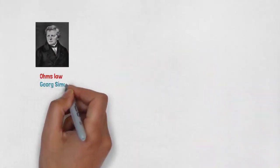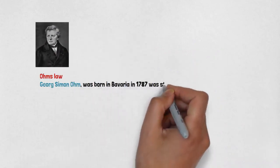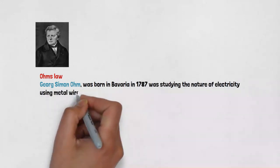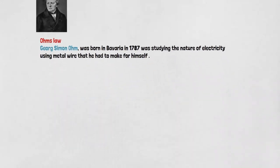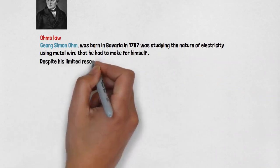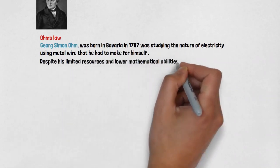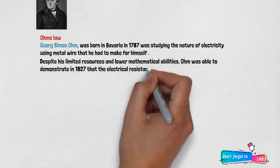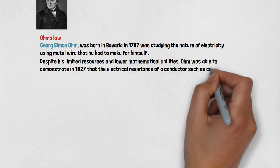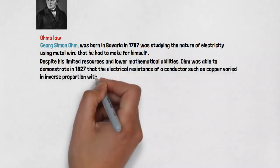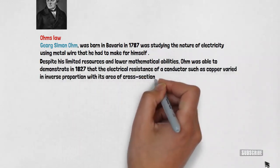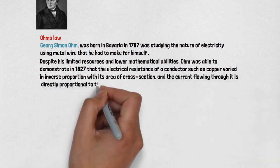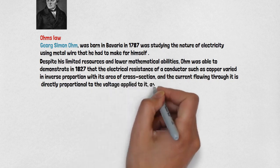George Simon Ohm was born in Bavaria in 1787 and was studying the nature of electricity using metal wire that he had to make for himself. Despite his limited resources and lower mathematical abilities, Ohm was able to demonstrate in 1827 that the electrical resistance of a conductor such as copper varied in inverse proportion with its area of cross-section, and the current flowing through it is directly proportional to the voltage applied to it, as long as temperature is held constant.